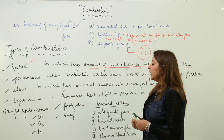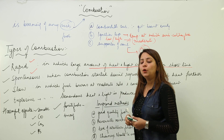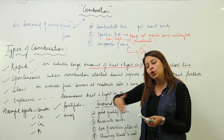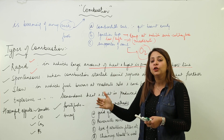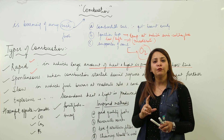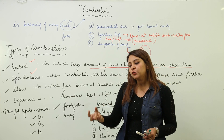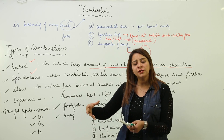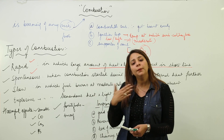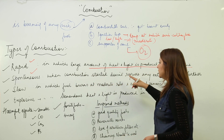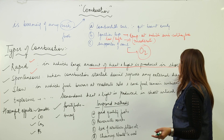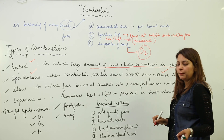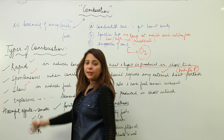Spontaneous combustion is one in which initial initiation is required, but once combustion starts it goes on by itself — no external source is required. For example, white phosphorus has a very low ignition temperature, so in summers it catches fire at room temperature because its ignition temperature is reached. Once combustion starts, no external source is needed — this is called spontaneous combustion.